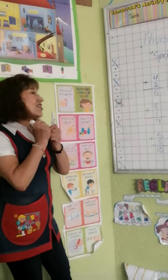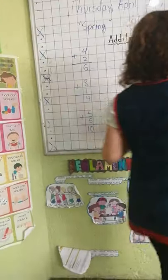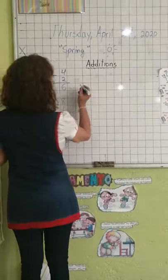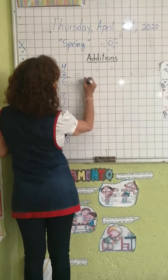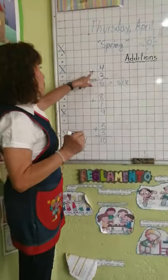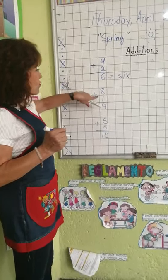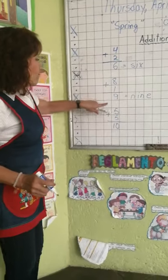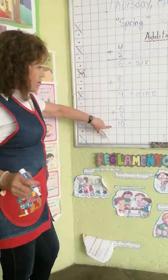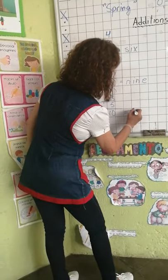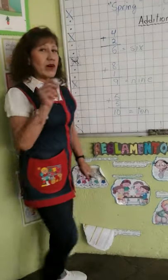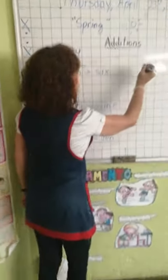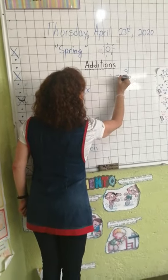We are going to write 3 more additions here for homework. You are going to write here the correct number: 4 plus 2 equals 6, 8 plus 1 equals 9, and 5 plus 5 equals 10.